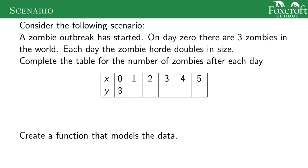Consider the following scenario: there's a zombie outbreak, and on day zero there are three zombies in the world. Each day, the zombie horde doubles in size. So let's complete this table. On the first day, if there's three zombies and it doubles, there's now going to be six zombies. The next day it doubles again — six becomes twelve. Twelve doubles to twenty-four. Then forty-eight. And on the fifth day, ninety-six. So this doubling has happened.